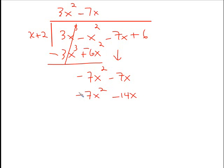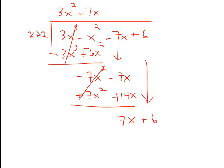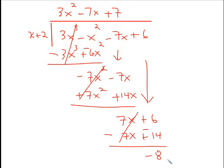Change the signs — positive, positive. This should always cancel. We get positive 7x. Bring down the positive 6. Repeat the process: positive 7 times x gives 7x; 7 times 2 is positive 14. Change the signs — this cancels, and we're left with negative 8 as a remainder. Since it's negative, we put minus 8 over what we divided by, x plus 2. So this is our answer.